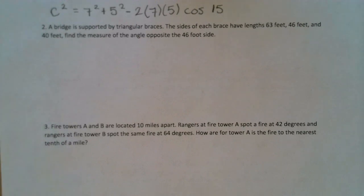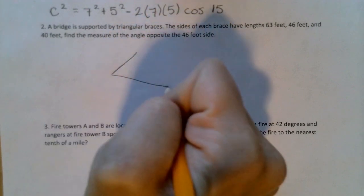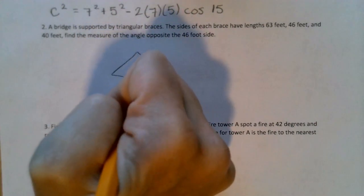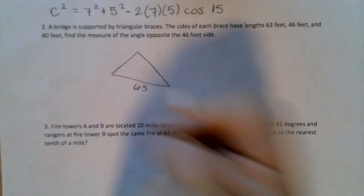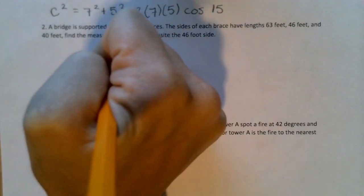Number 2. A bridge is supported by a triangular brace. The sides of each brace have lengths of 63 feet, 46 feet, and 40 feet. Find the measure of the angle opposite the 46 foot side. Alright, so I'm going to draw my triangle. Let's see. This down here looks like the longest side, so I'll call that 63. Let's do 46, and 40.